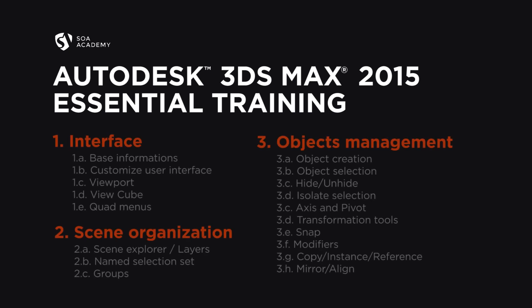Point one: Interface. In this first part, we're going to see some basic information about the 3D Max interface — toolbars, panels, ribbons and other useful things. Then we can try to customize the user interface. We're going to learn about viewports and how I personally work with them. Then we will talk a little bit about ViewCube and Quad Menus.